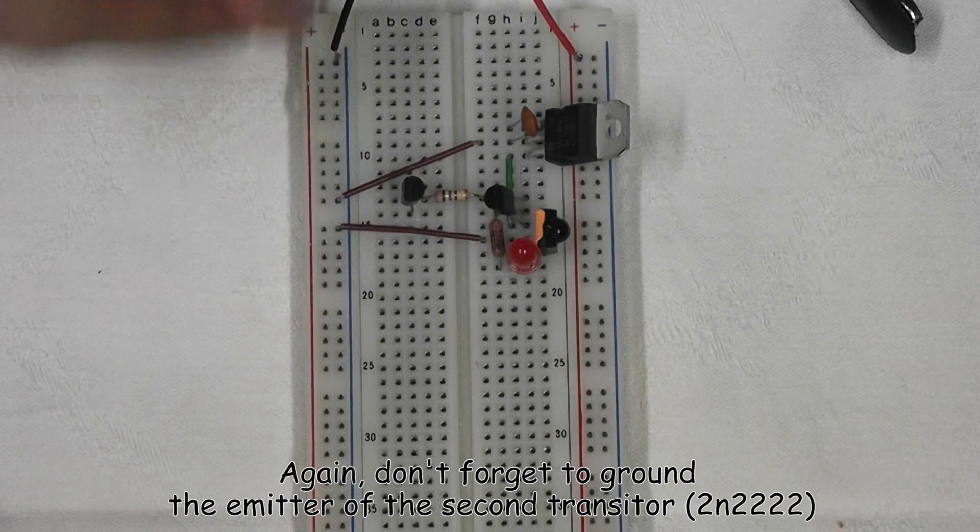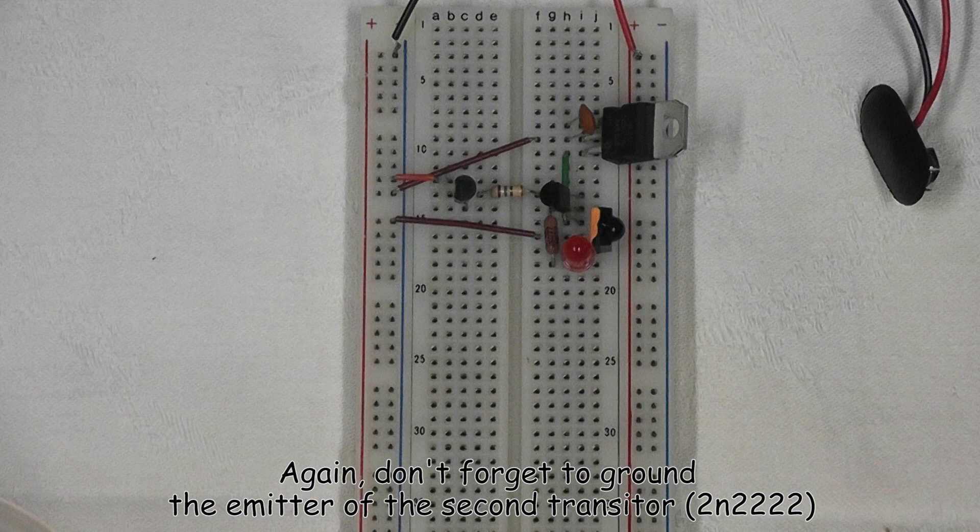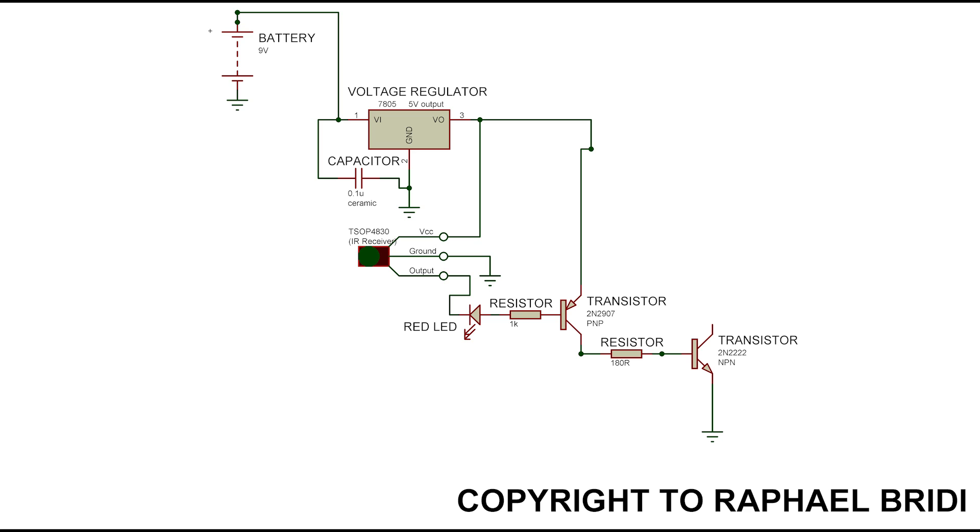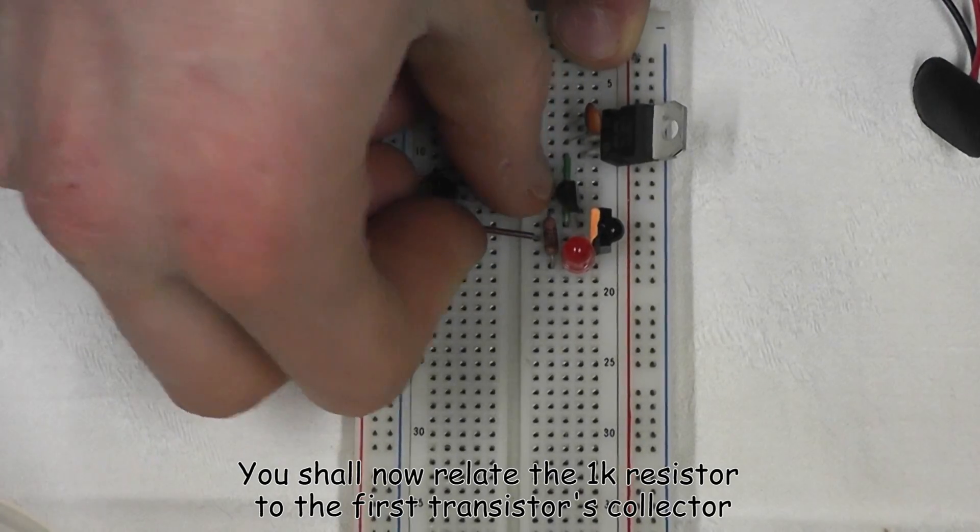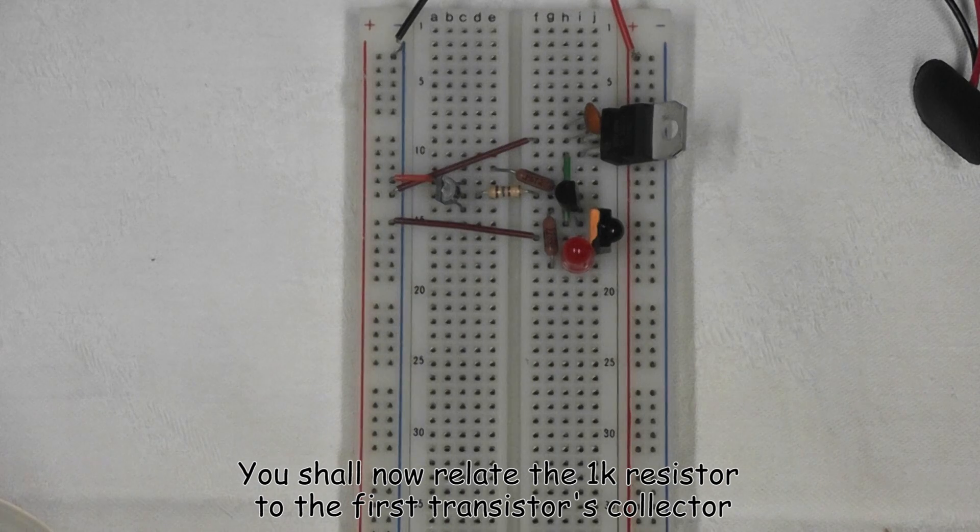Again don't forget to ground the emitter of the second transistor. You shall now relay the 1K resistor to the first transistor's collector.